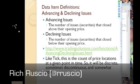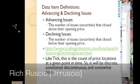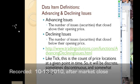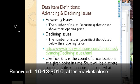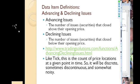For advancing and declining issues, advancing issues are the number of issues whose bar closed above their opening price. If you do it daily, it's just the vanilla day close. If you do it every minute, it's the one-minute close. Declining issues are securities that close below their opening price.